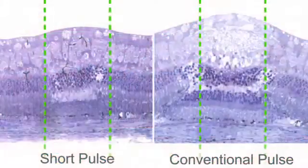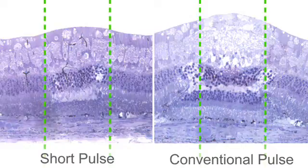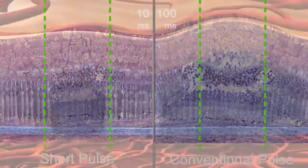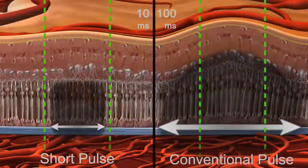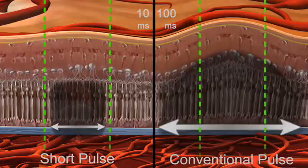As seen in histology, Pascal's short pulse durations reduce heat diffusion into the retina and choroid. Less lateral heat diffusion results in less RPE damage.